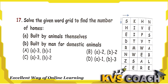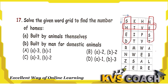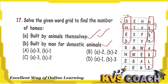Question 16: Solve the given word grid to find homes built by animals themselves and homes built by man. Homes found in the grid: shed (man-made), hive (bee-made), nest (bird-made), stable (man-made), and web (spider-made). Animal-made homes: hive, nest, web — that is 3. Man-made homes: shed and stable — that is 2. So A equals 3 and B equals 2, which is option C.